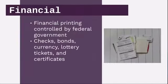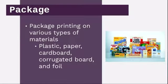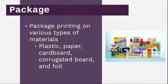Financial printing is controlled by the federal government and includes checks, bonds, currency, lottery tickets, and certificates. The biggest industry segment is packaging. Package printing uses various types of material — plastic, paper, cardboard, corrugated board, and foil. It is the largest part of the industry's output. You can walk into any store — especially a grocery store or retail store — and see packaging everywhere.